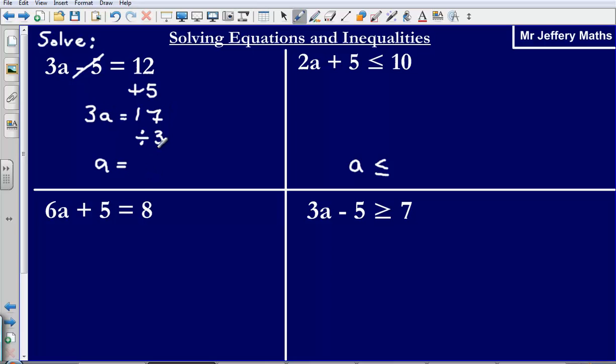So 17 divided by 3, I could write that as 17 over 3, I could write that as a top heavy fraction, 17 over 3.